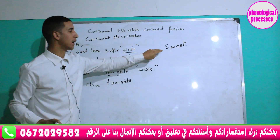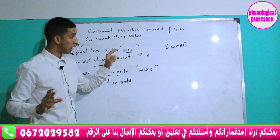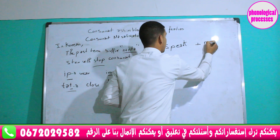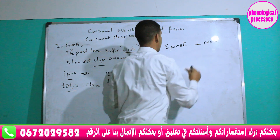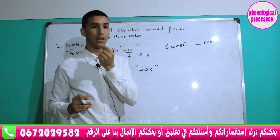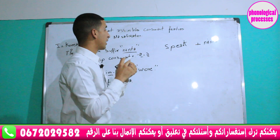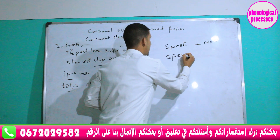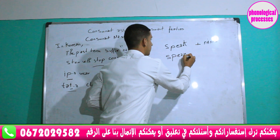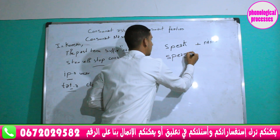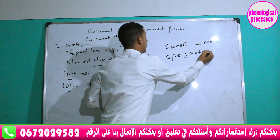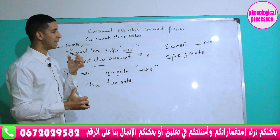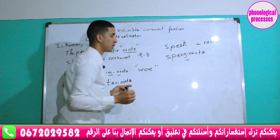We will use the word 'speak' in Korean, first in the present, then in the past using the suffix 'nenta'. The final consonant is 'k', which is a stop. So the stop 'k' will change, and the next sound uses the place of articulation of that stop — meaning the stop becomes a nasal at the same place of articulation.